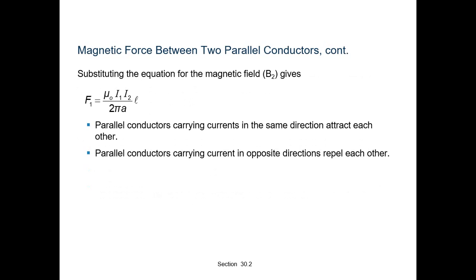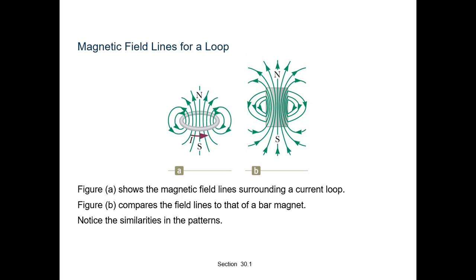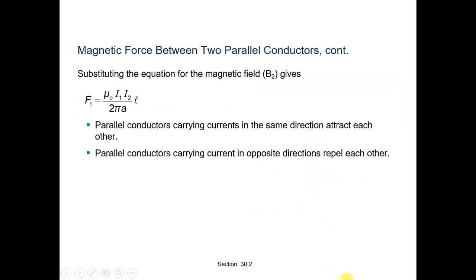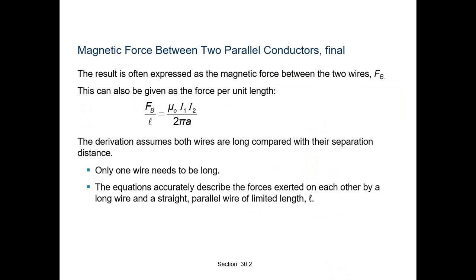So when current flows in the same direction in both wires, it is an attractive force. When currents flow in opposite directions, the wires repel each other. The result is often expressed as the magnetic force per unit length between two wires: Fb/L = μ0·I1·I2 / (2π).